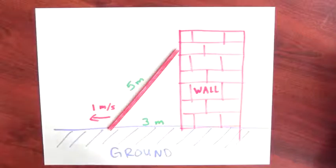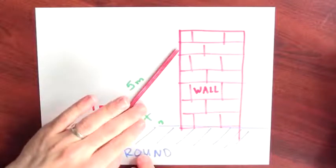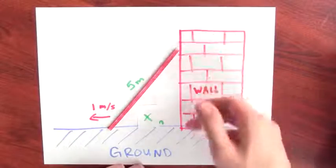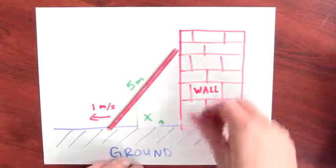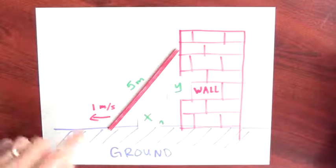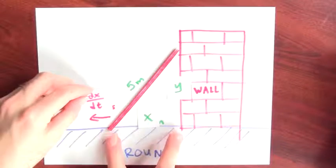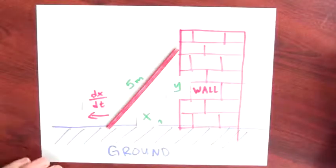So now I'm going to label this. Instead of three, I'll call this distance from the wall to the base of the ladder x. And I'll call this distance from the top of the ladder to the bottom of the wall y. And this speed, the speed with which I'm pulling the ladder away, that's really asking how quickly this distance is changing. So that's dx/dt.